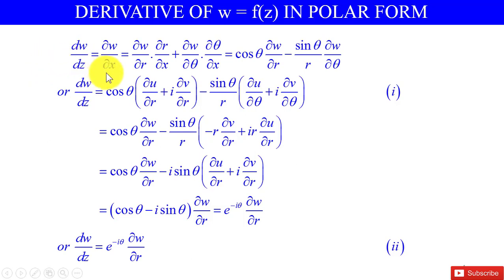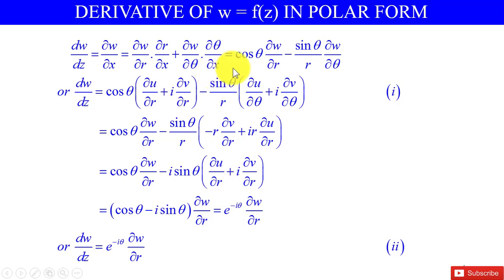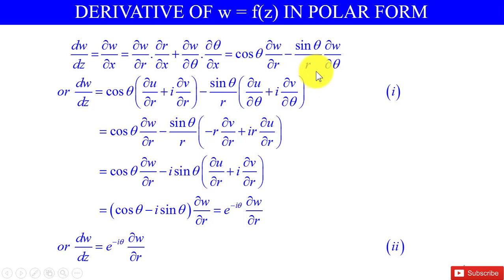Now, dw/dz = ∂w/∂x = ∂w/∂r · ∂r/∂x + ∂w/∂θ · ∂θ/∂x, because x is a function of r and θ. This equals cosθ · ∂w/∂r + (-sinθ/r) · ∂w/∂θ, since ∂r/∂x = cosθ and ∂θ/∂x = -sinθ/r.